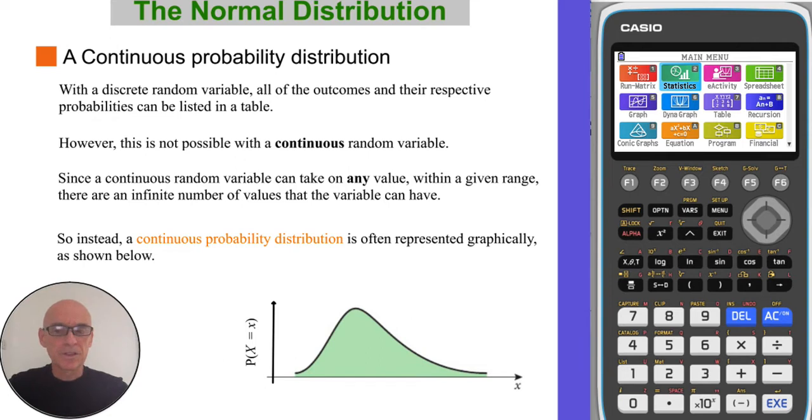With a discrete random variable, all of the outcomes and their respective probabilities can be shown in a table. However, this is not possible with a continuous random variable.